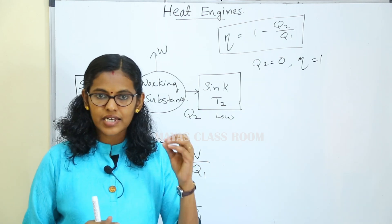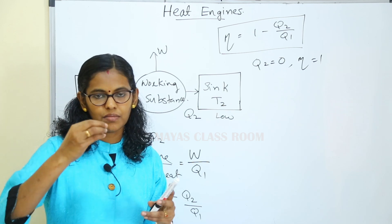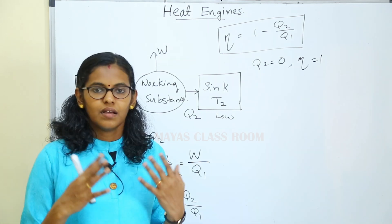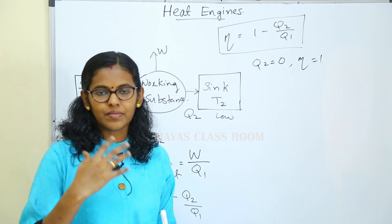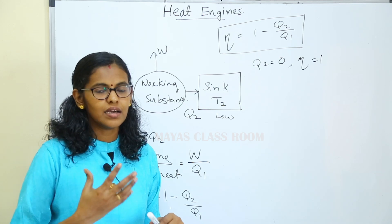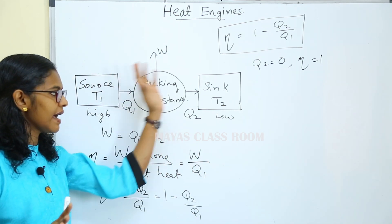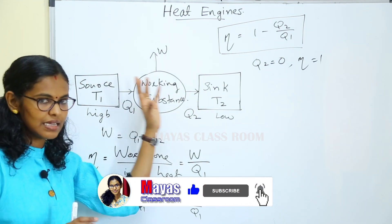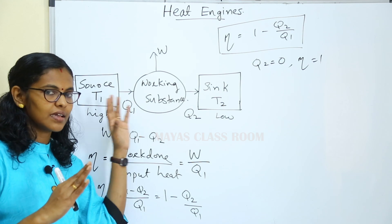The heat engine is of two types: external combustion engine and internal combustion engine. In an external combustion engine, the fuel burns externally. In an internal combustion engine, an example is the diesel or petrol engine. The schematic diagram of the heat engine is important.